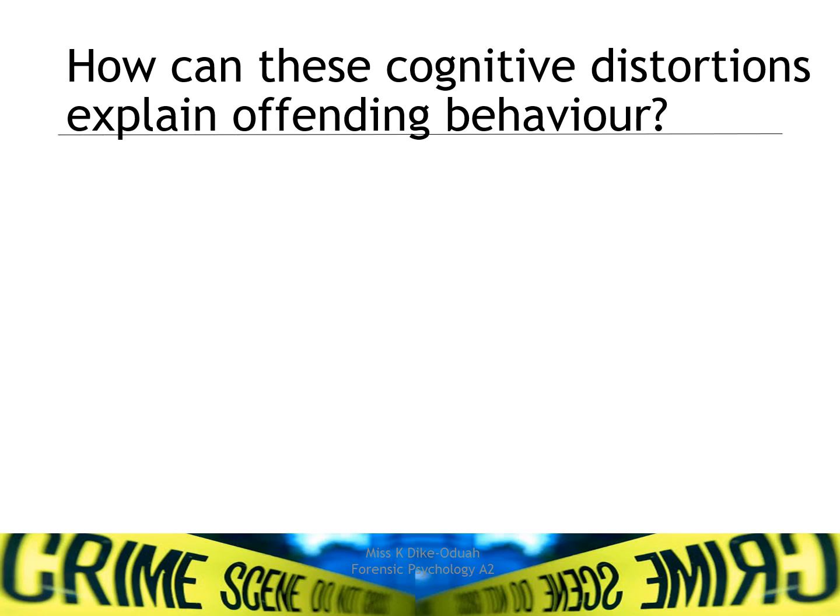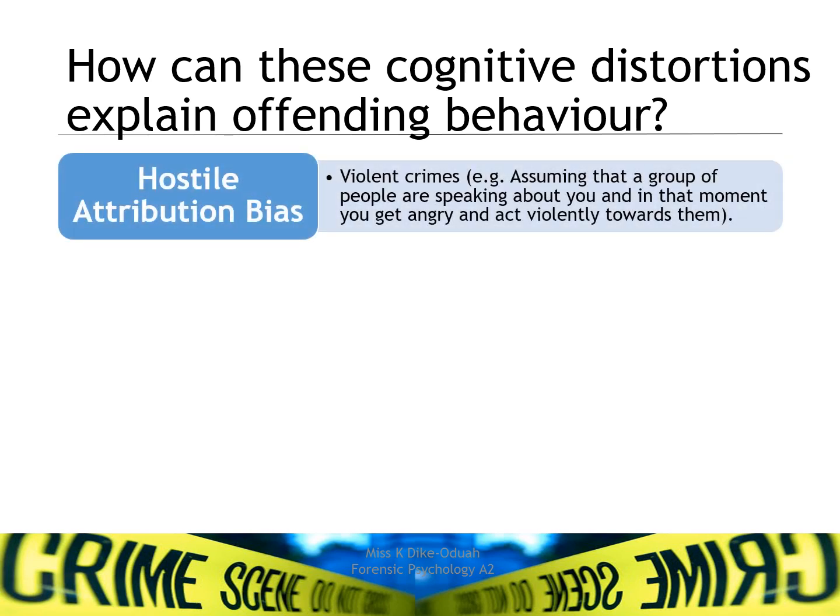So how can these cognitive distortions explain offending behaviour? Starting with hostile attribution bias: it could explain violent crimes, whereby an individual assumes that a group of people are speaking about them or planning to attack them, and they then react violently towards that group, hence committing a crime.